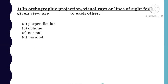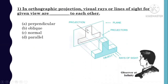Let's see the figure. The question is about orthographic projection — visual rays or lines of sight, in which condition they are to each other. You can see here they are parallel to each other. So all rays are parallel to each other. The answer is option D, parallel.